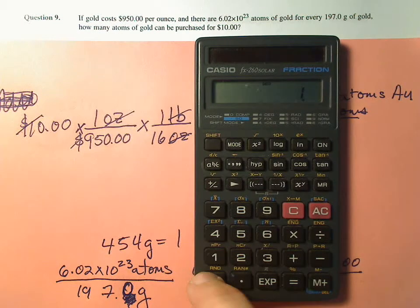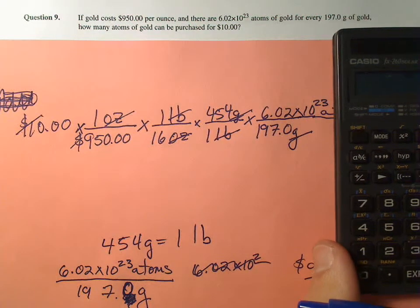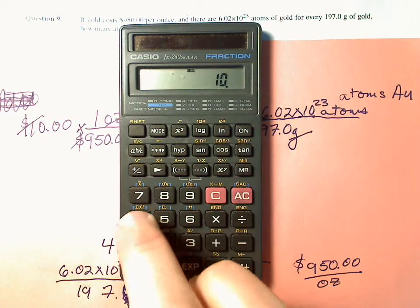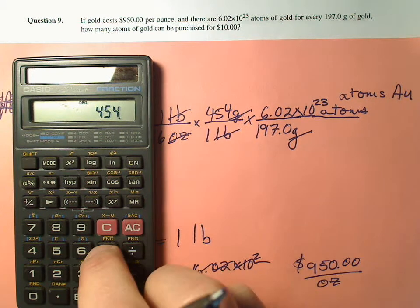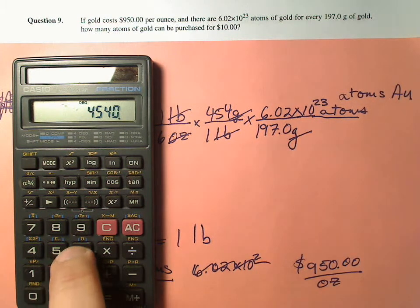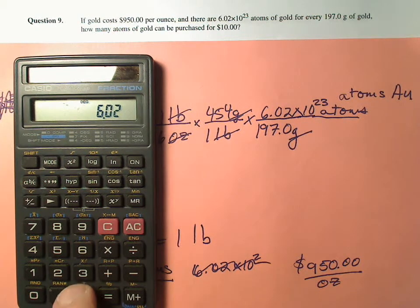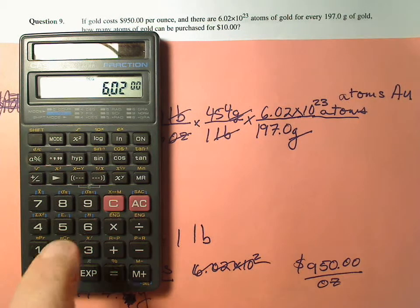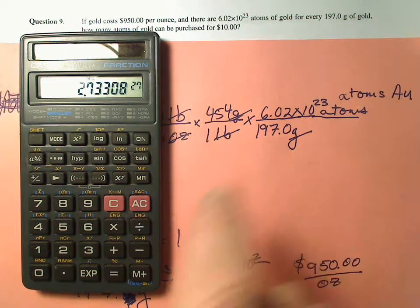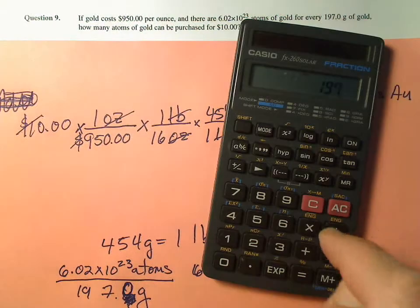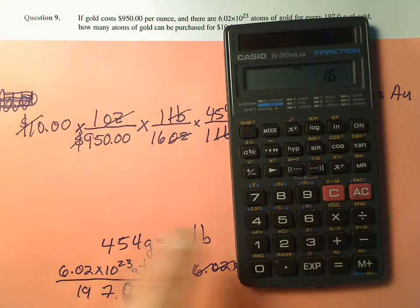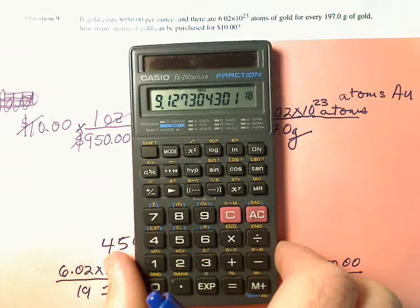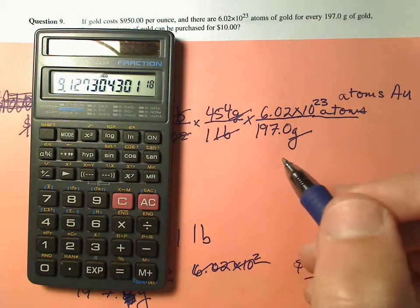So I have 10 times, what do I have? 1, 1, oh, 454. So 10 times 454 times this big old thing, 6.02 times 10 to the 23rd. 6.02, this calculator here is EXP down here. So EXP 23 divided by 197 and divided by 16 divided by 950, equals. Alright, we expect a whole boatload of atoms because atoms are really teeny tiny and we've got a big number.